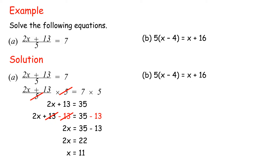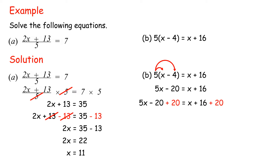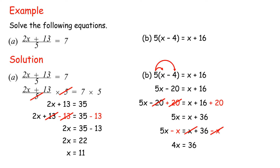(b) 5(x - 4) = x + 16. Expand: 5x - 20 = x + 16. Add 20 to both sides: 5x = x + 36. Subtract x from both sides: 4x = 36. Divide both sides by 4: x = 9.